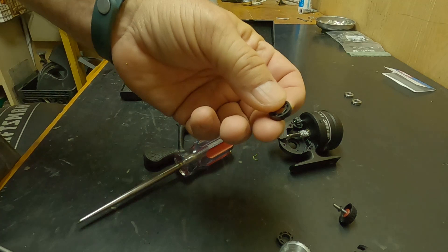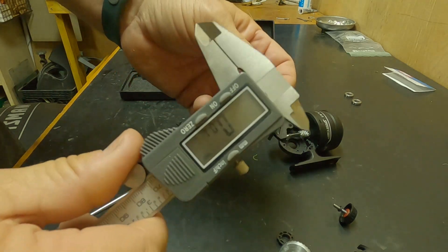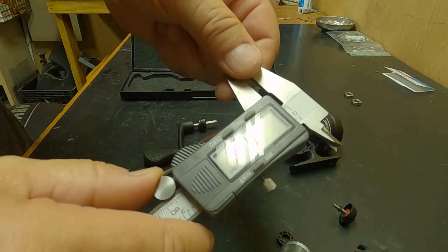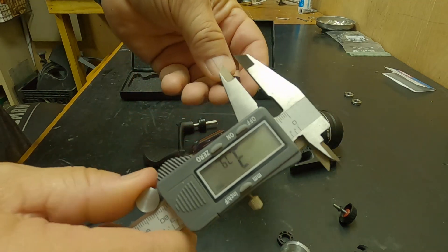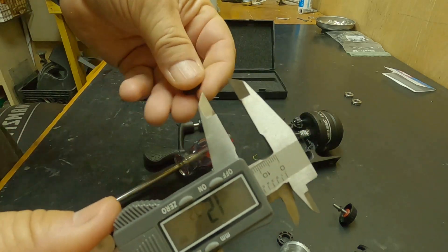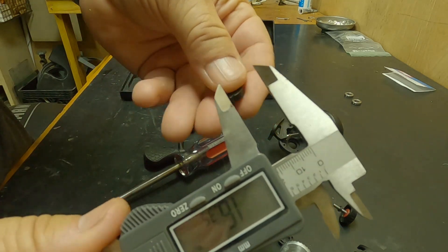Now the important thing is to get a good measurement here. I have some dial calipers that can go to either inch or metric. Most of these bearings on Amazon or eBay are going to be measured in millimeters.